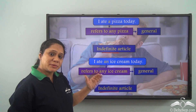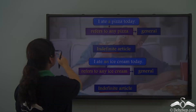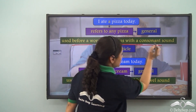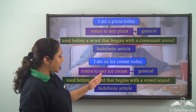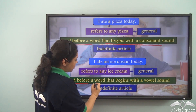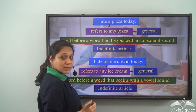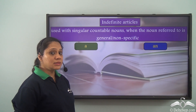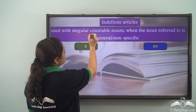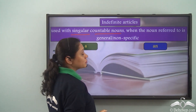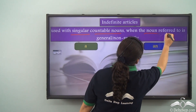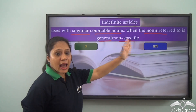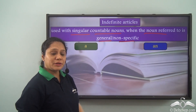But what is the difference between a and an? A is used before a word that begins with a consonant sound, whereas an is used before a word that begins with a vowel sound. Indefinite articles are used with singular countable nouns when the noun referred to is general or non-specific. Both a and an are indefinite articles.